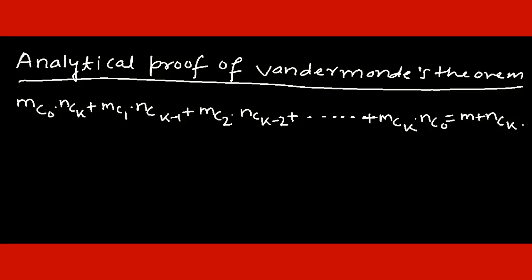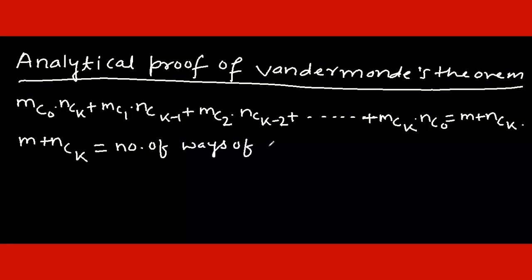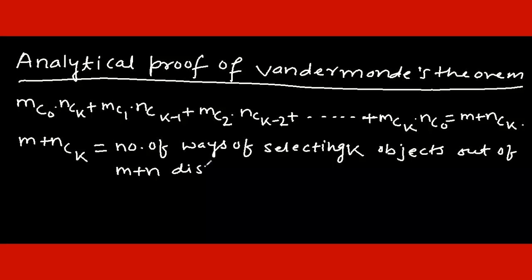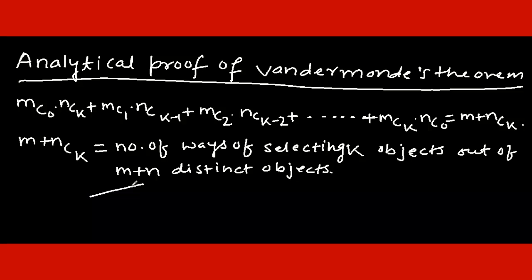What does m+nCk represent? This is equal to the number of ways of selecting k objects out of m+n distinct objects. We will divide these m+n distinct objects into two groups: one group contains m objects, and the other group contains n objects.